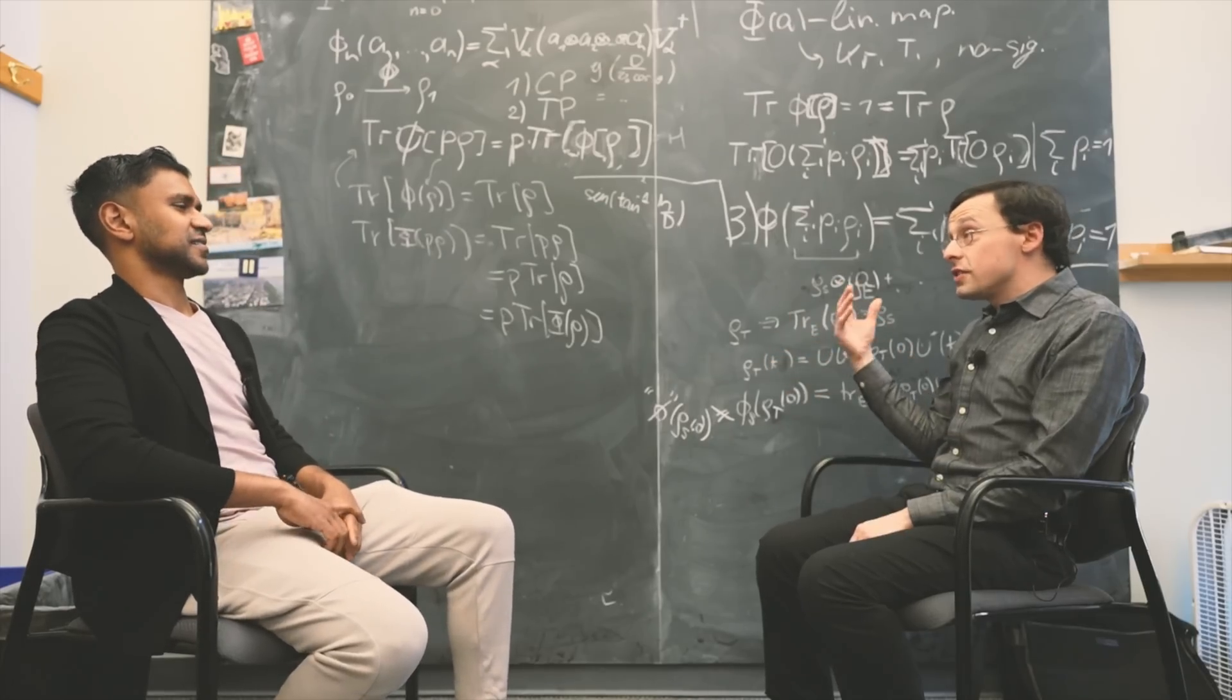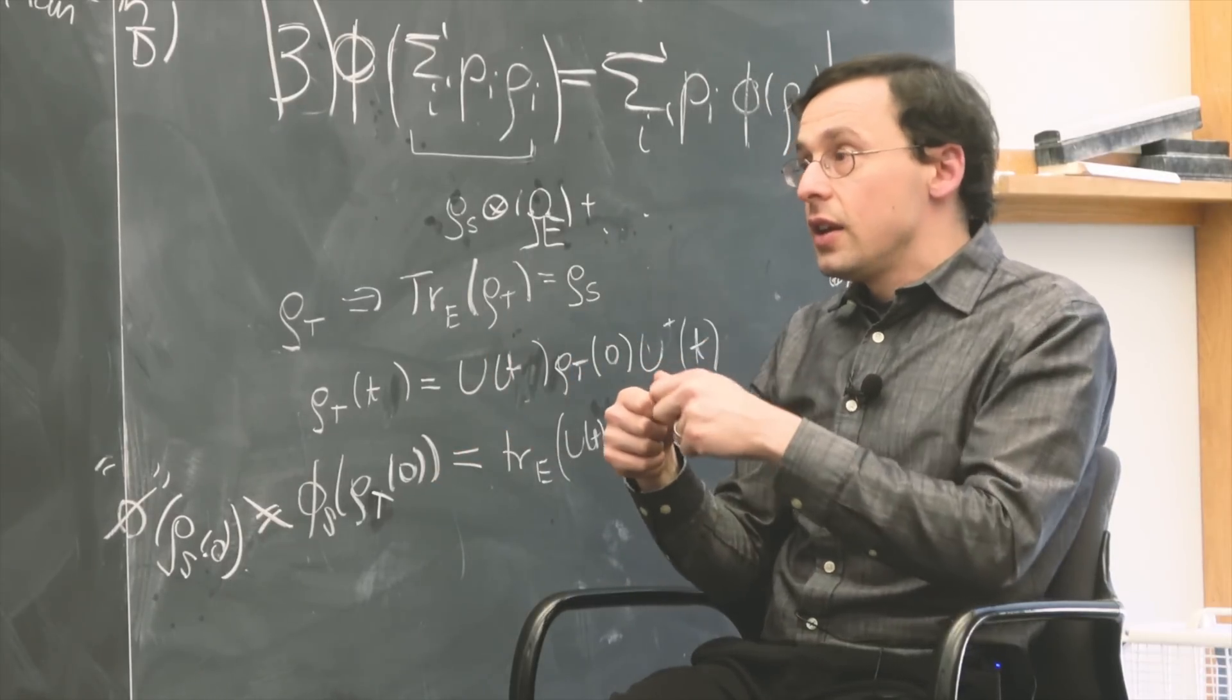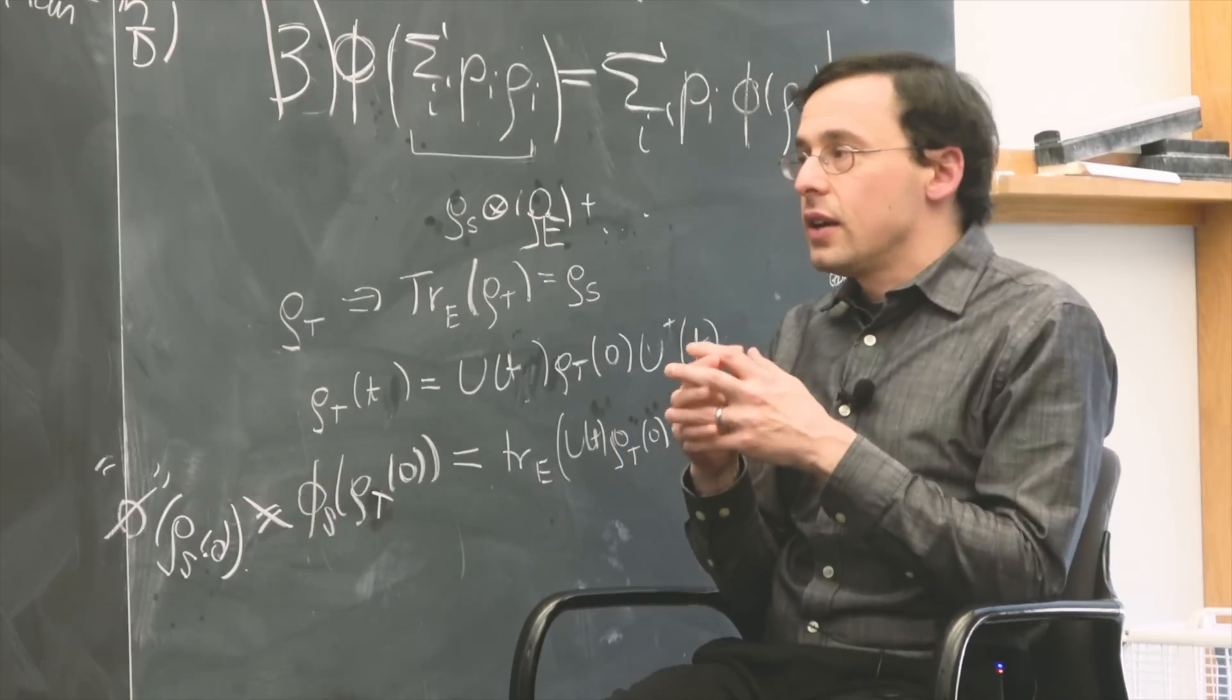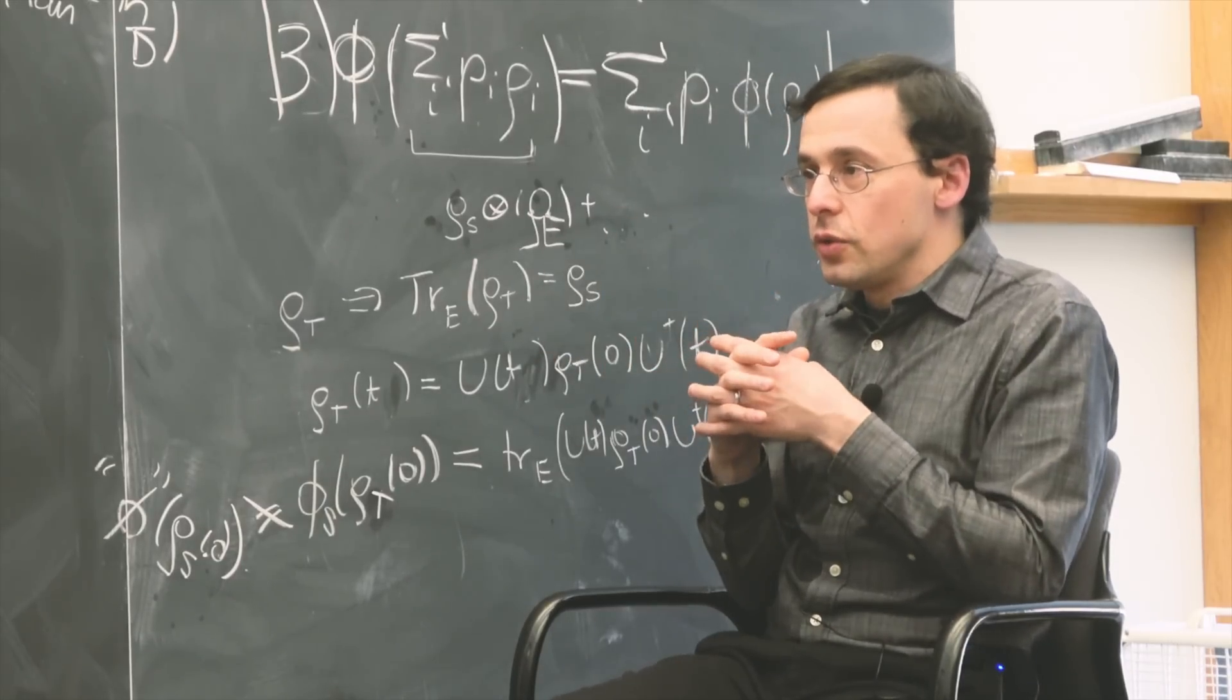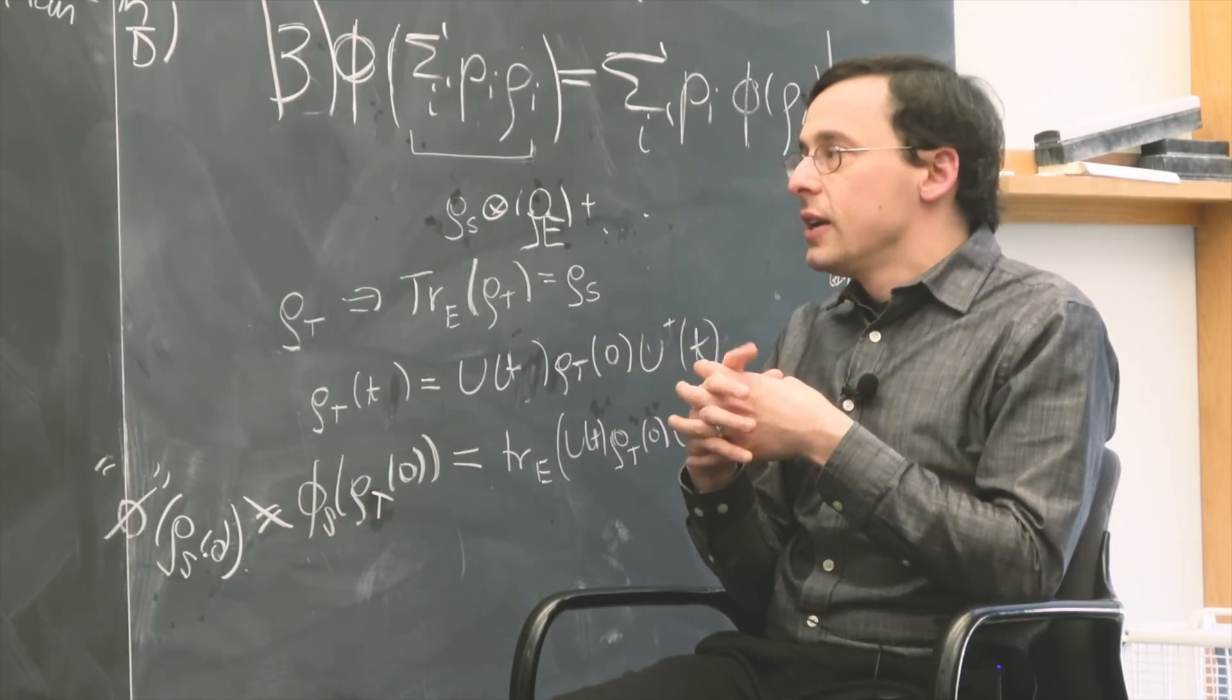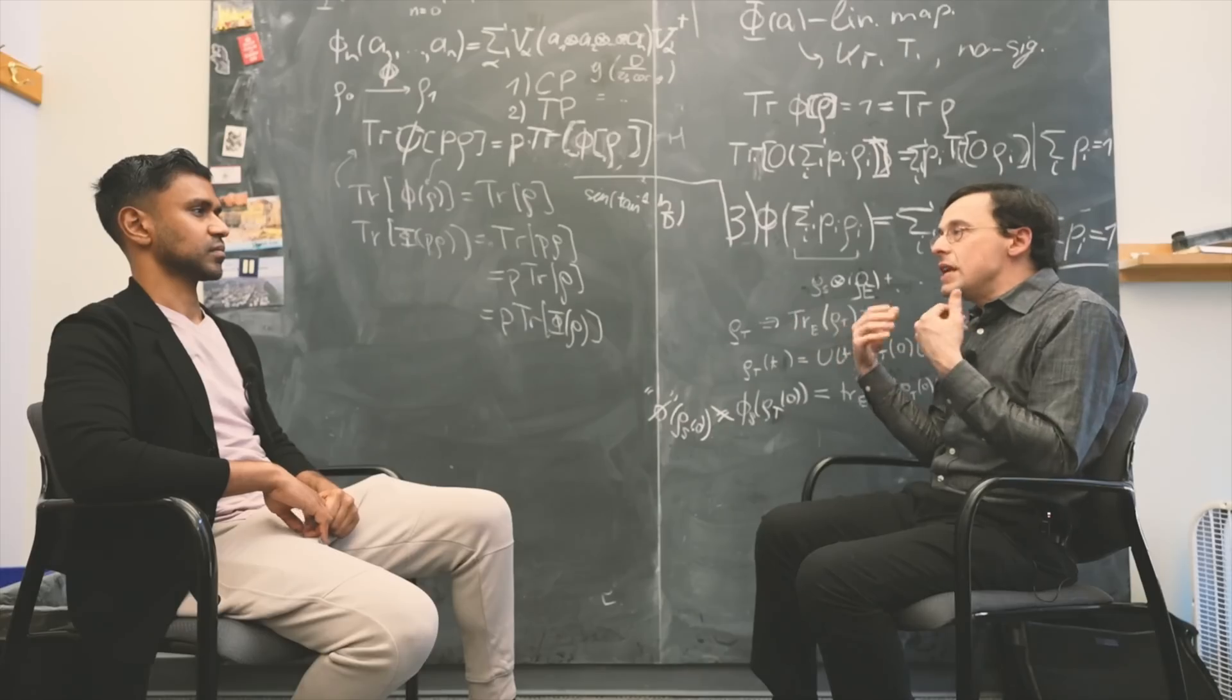And all the weirdnesses of the Hilbert space picture, superposition of states, interference effects, these are all related to what are called coherences, phases. All these things are connected to superposition, interference, and coherences. These could be understood now, they could be given a meaning.